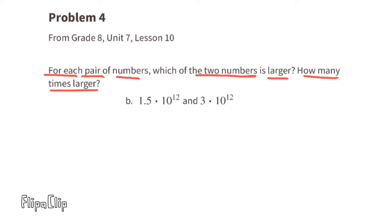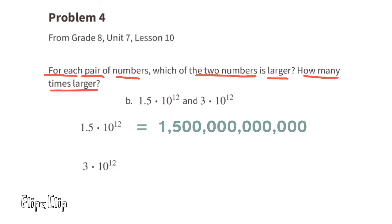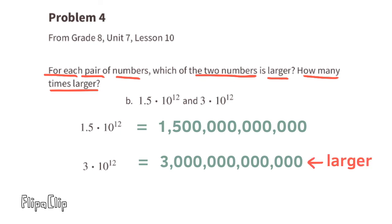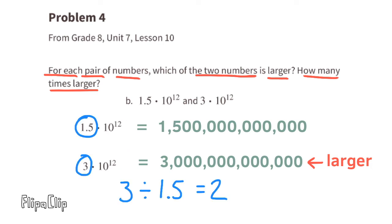Part B: 1.5 times 10 to the power of 12 and 3 times 10 to the power of 12. 1.5 × 10¹² is 1 trillion 500 billion, and 3 × 10¹² is 3 trillion. Three trillion is larger than 1 trillion 500 billion. Since both numbers are being multiplied by 10¹², we can just divide 3 by 1.5. Three divided by 1.5 is 2, so 3 × 10¹² is 2 times larger than 1.5 × 10¹².